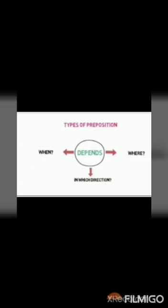Here, 'under' is the preposition. Types of prepositions: these are divided into three types depending on situations. First, when — preposition of time. Second, where — preposition of place. Third, direction — preposition of direction.